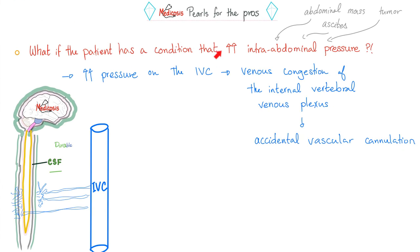Complications of epidural anesthesia: accidental dural puncture — dangerous because of the large volume of local anesthetic used; if injected into the subarachnoid space instead, it can cause permanent neurological damage. Also: epidural abscess, epidural hematoma, nerve injury, and permanent neurological damage.